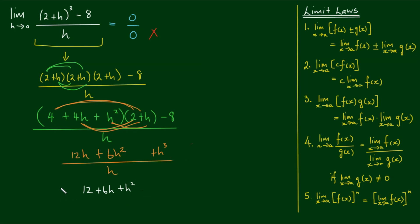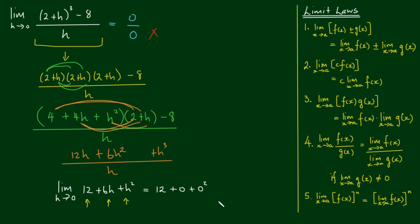We've simplified this limit to: the limit as h approaches 0 of 12 plus 6h plus h squared. By Limit Law number 1, we can treat each of these as mini-functions and evaluate the limit of each term separately. The first term, 12, is unaffected by the limit and remains 12. The second term, 6h, as h approaches 0 gives 6 times 0, which is 0. The final term, h squared, as h approaches 0 gives 0 squared, which is 0. So the limit is equal to 12 after algebraic manipulation.